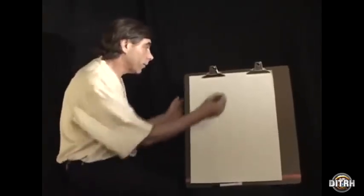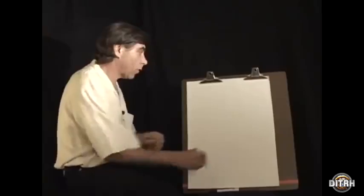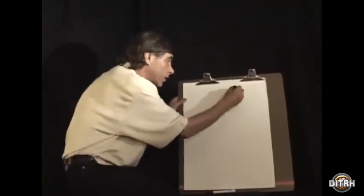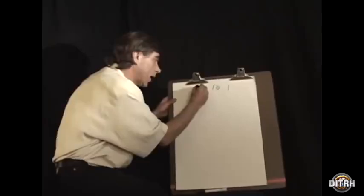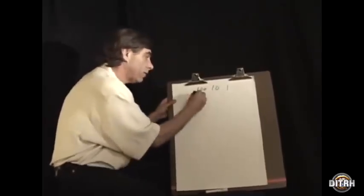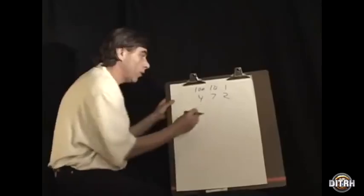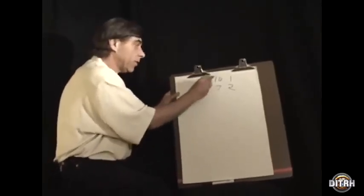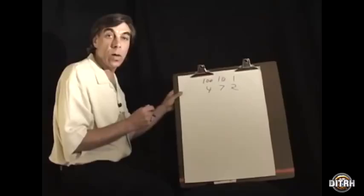Today when we write a number we work in powers of ten and place value. We have the ones, the tens, the hundreds columns, so if you wanted to say 472, we're really saying four hundreds, seven tens plus two ones.